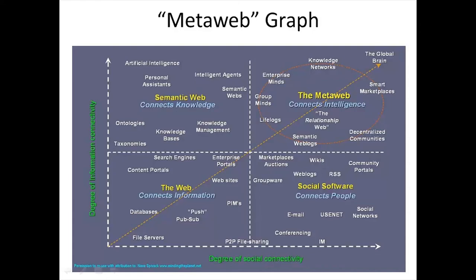This slide presents a slightly different way of looking at the related scenario. Novus Bivak on his blog, Minding the Planet — and you can find the URL at the bottom of the diagram — suggested that internet technologies can be characterized using two dimensions: degree of information connectivity and degree of social connectivity.